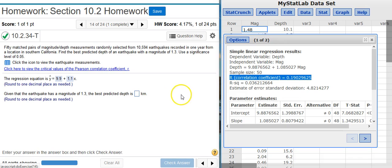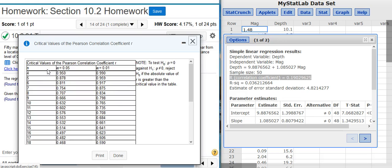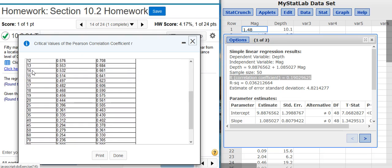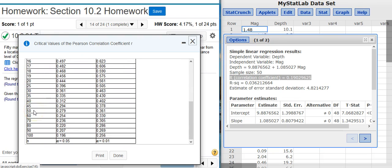We have to compare with our critical R value. Here in my problem statement, there's a link to a critical value table. So I click on that link. And here in the table, I need to identify how many samples I have. I have 50 pairs of sample data. So I'm going to go down to the line of 50.